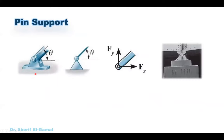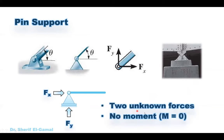For the pin support it looks like this in a real steel structure, and this is showing a real pin support in one of the bridges — in all of these cases we have two unknown forces FX and FY. For the pin support we have two unknowns FX and FY and there is no moment. You can calculate the reactions horizontal and vertical, or you can get them at any other perpendicular direction — parallel to the element and perpendicular to the element. Usually we get them as FX and FY, but in some problems it will be easier to get them parallel and perpendicular to the element to help draw the shear and moment diagrams.